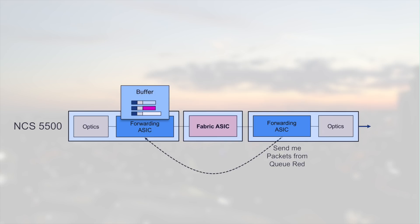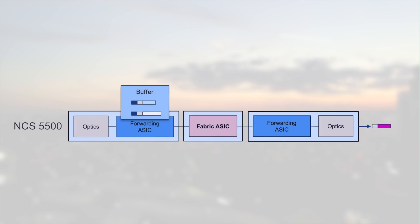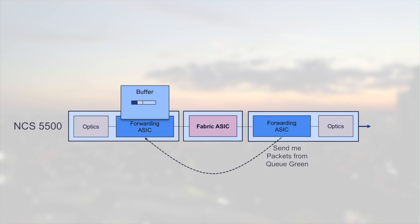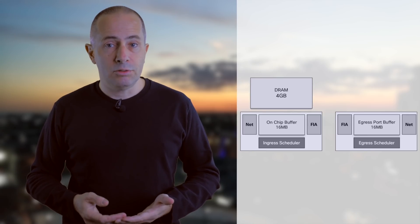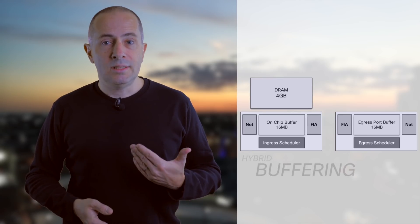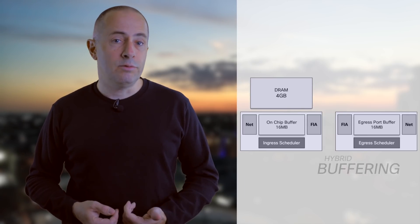As soon as the congestion situation disappears, the QoS configuration will be translated into scheduler decisions. In this example, the red packet in the priority queue will be transmitted first, and then the other queues will be emptied following the percentages defined in the policy. If you paid attention to the last diagrams, we represented the ingress buffer being both inside and outside the NPU. Indeed, the NCS5500 uses a model called hybrid buffering.